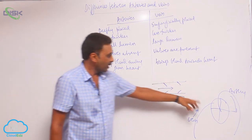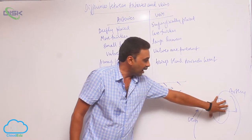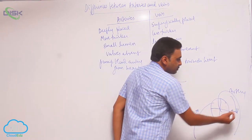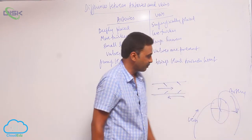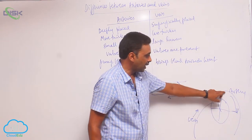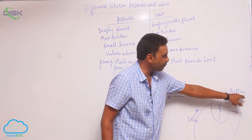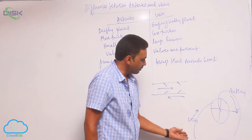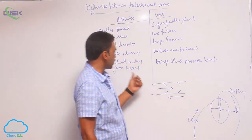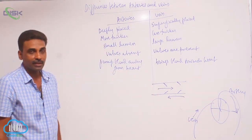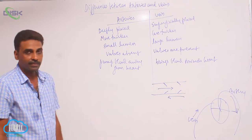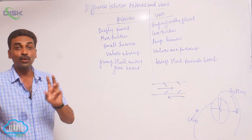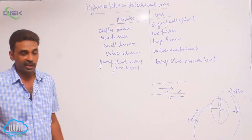An artery is a blood vessel which pumps blood away from the heart. A blood vessel which brings blood towards the heart is called a vein. So, the classification is based on direction of blood flow. But there are exceptions — the exceptions are only the pulmonary artery and pulmonary vein.